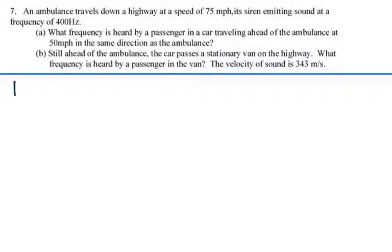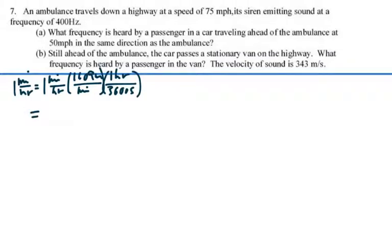Alright, well, one mile per hour - let's convert that. I know there are 1,609 meters in a mile, and in one hour there's 3,600 seconds. So one mile per hour is equal to 0.447 meters per second.